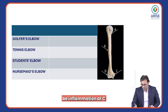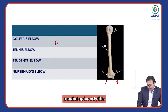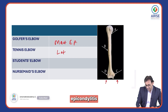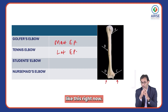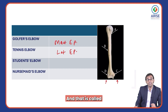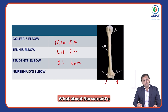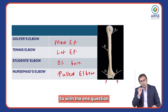Now for more clinical aspects: if there is inflammation at point C, that is medial epicondylitis, it is called golfer's elbow. Similarly, at point D, lateral epicondylitis causes tennis elbow. Inflammation at the lower part is called olecranon bursitis. Nursemaid's elbow is also called pulled elbow in a child.